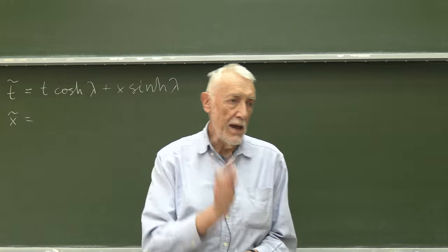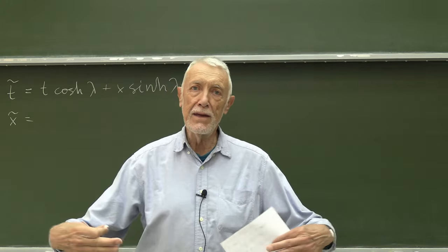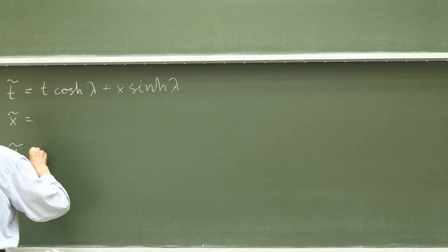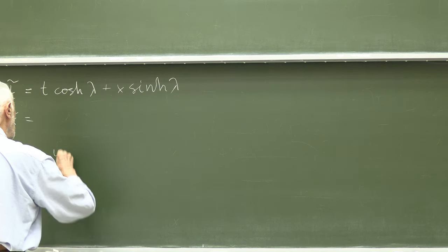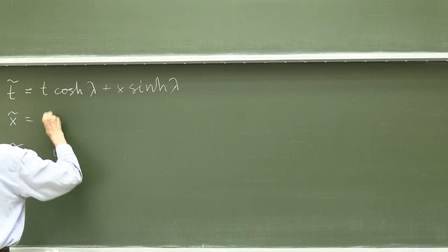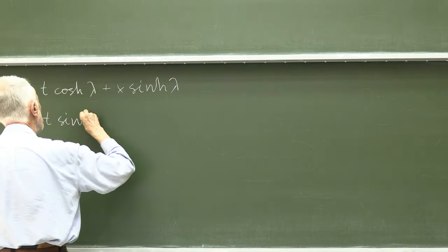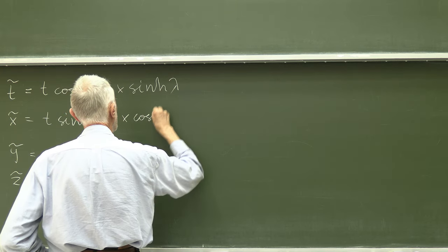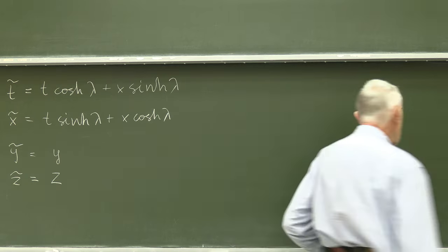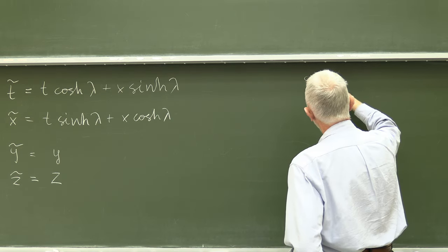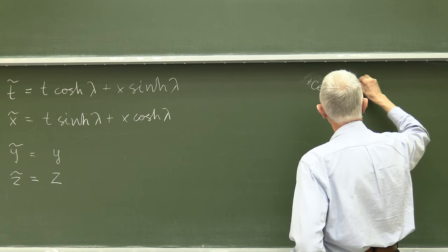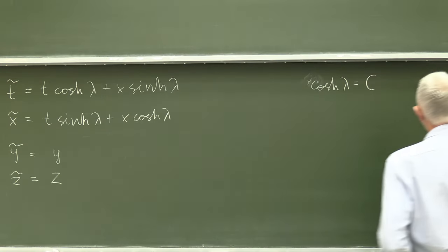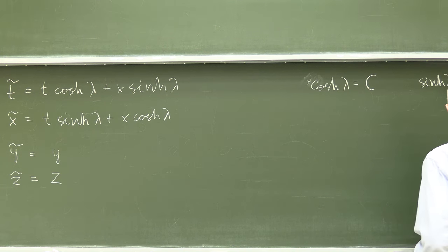The longitudinal x mixes with time and vice versa, whereas the remaining orthogonal coordinates do not change. x prime is t hyperbolic sine of lambda plus x hyperbolic cosine of lambda. We have denoted hyperbolic cosine of lambda by c, whereas hyperbolic sine of lambda was called s.